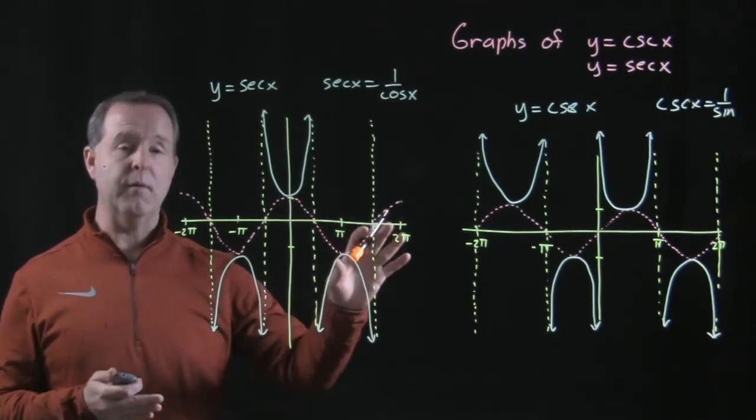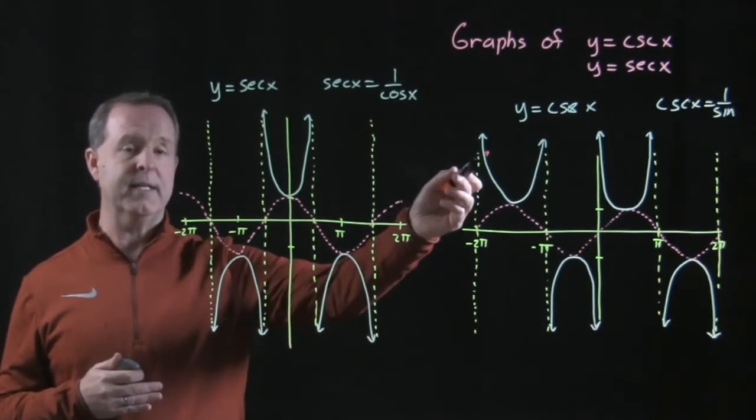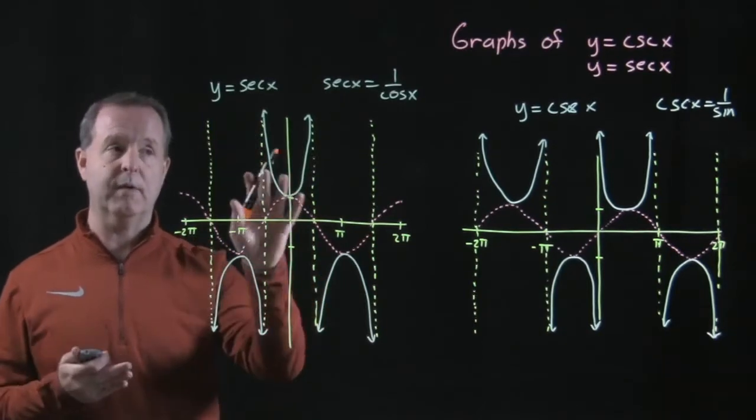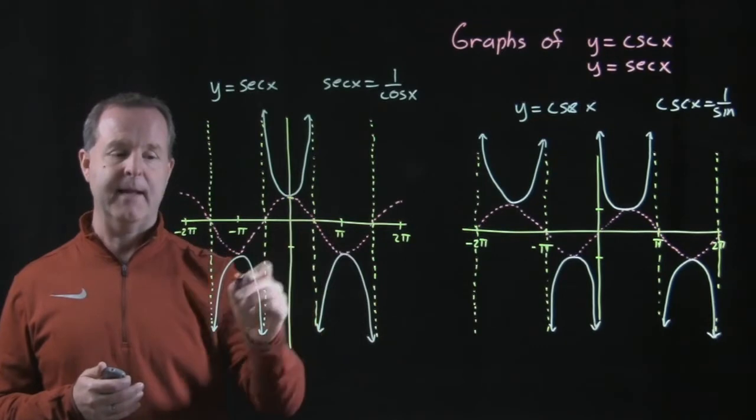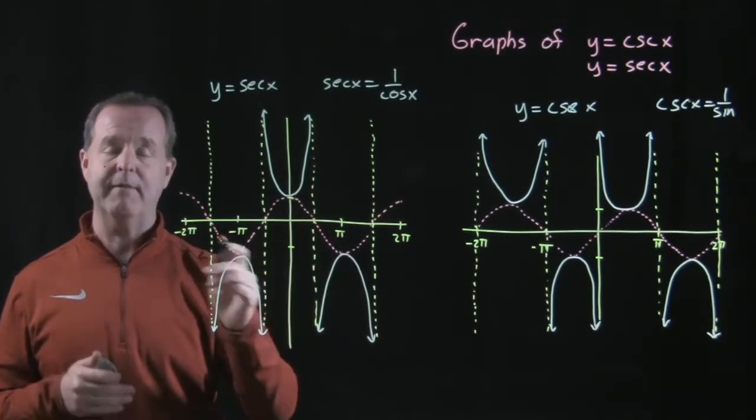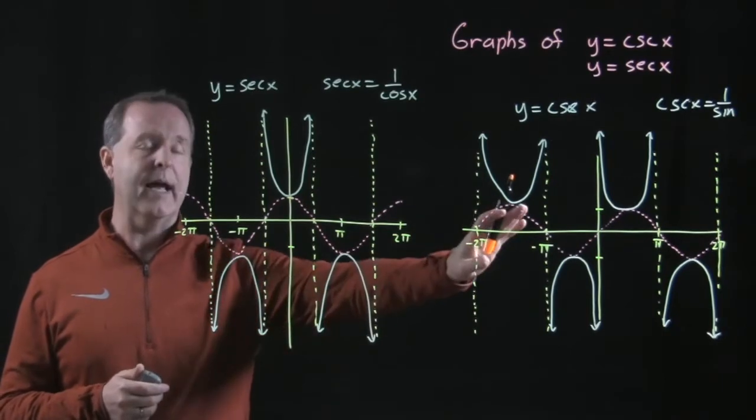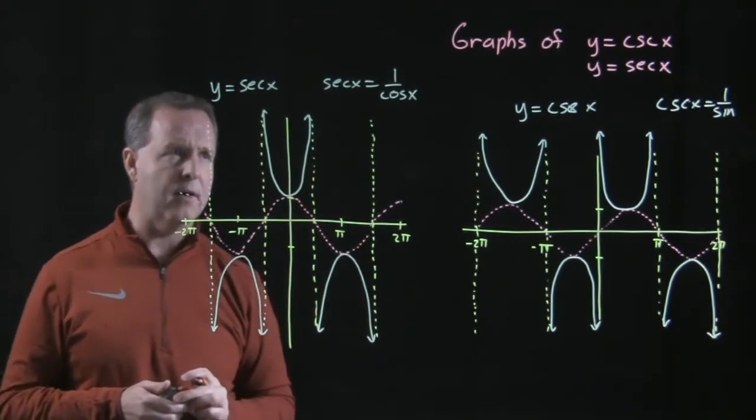What I notice is that both of these graphs are reciprocals of their other functions. Cosecant is a reciprocal of sine, secant is a reciprocal of cosine. Therefore, if I look at the cosine graph and I see the secant graph on top of it, I start to see a little bit of a reciprocal type of movement. And likewise with cosecant and sine over there in the first one.